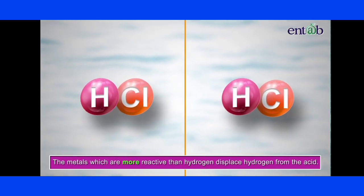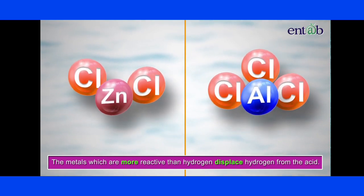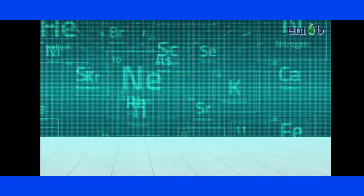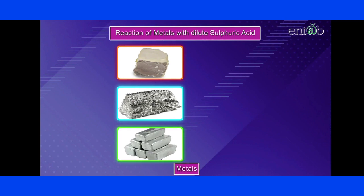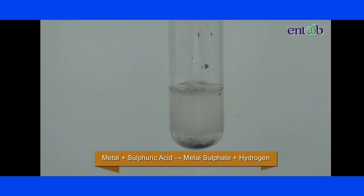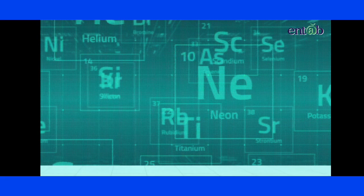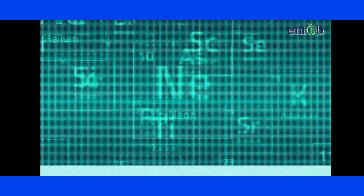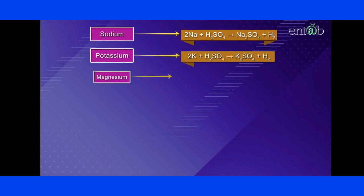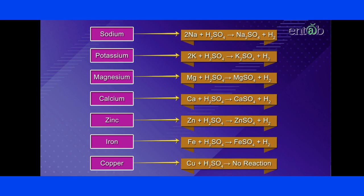Let us now study the reactions of metals with dilute sulfuric acid. Metals react with dilute sulfuric acid to form metal sulfates and hydrogen gas. Let us compare all the reactions of sodium, potassium, magnesium, calcium, zinc, iron and copper with sulfuric acid carefully.